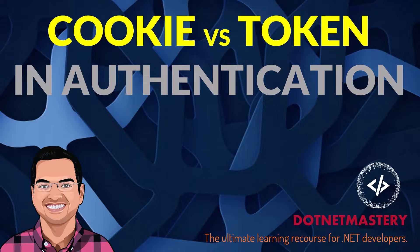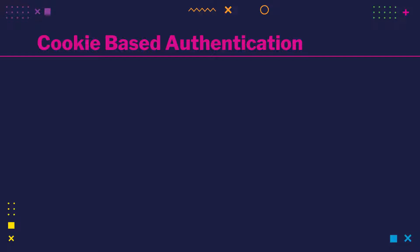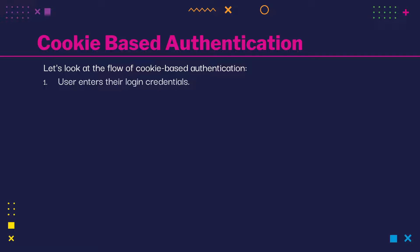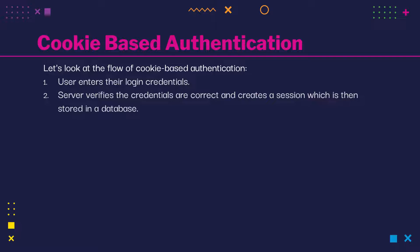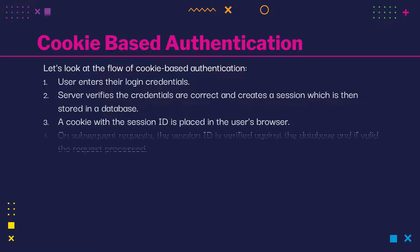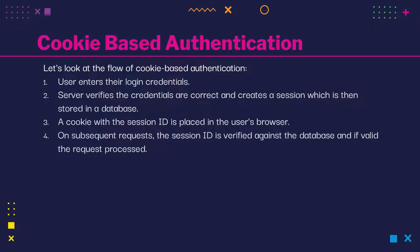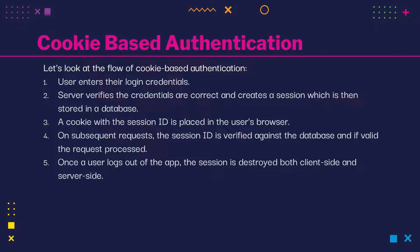Now that we have a basic understanding of cookie and token authentication, let me walk you through the traditional flow of how each works. With cookie based authentication: initially, the user enters their login credentials — the username and password. The server verifies the credentials, and if they are correct, it creates a session stored in the database and then a cookie. That session ID is placed in the user's browser with a certain expiration time. On subsequent requests, the session ID is verified against the database, and if valid, the request is processed. Once a user logs out, the session is destroyed on both the client and server.